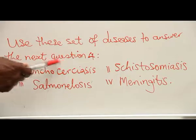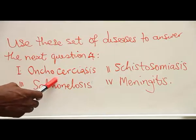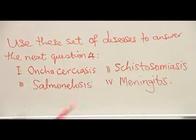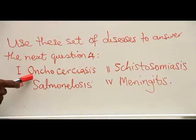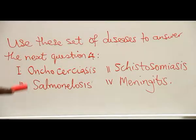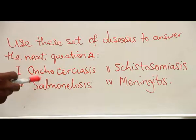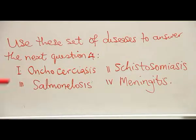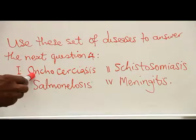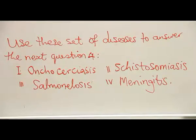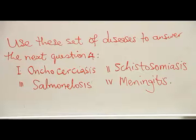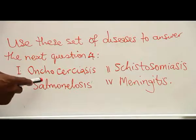We are given a set of diseases to use for question four: onchocerciasis, schistosomiasis, salmonellosis, and meningitis. Onchocerciasis is also known as river blindness. It is caused by a filarial worm called Onchocerca volvulus. The germ is transmitted by the black fly, which lays its eggs in fast-flowing water; the fast-flowing water provides oxygen for the survival of the eggs.